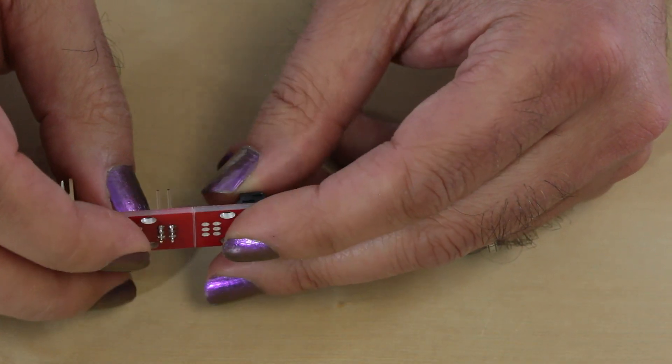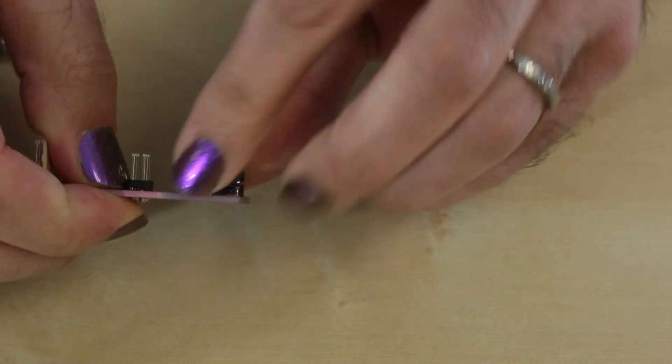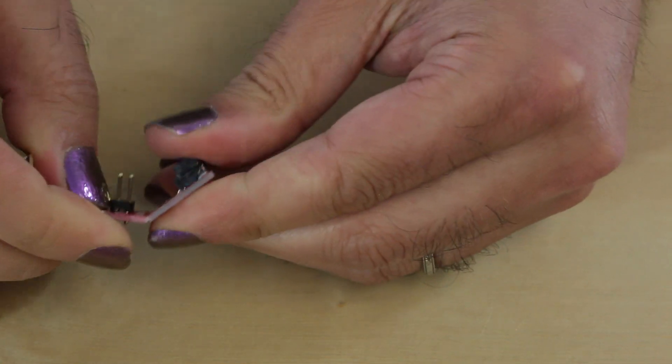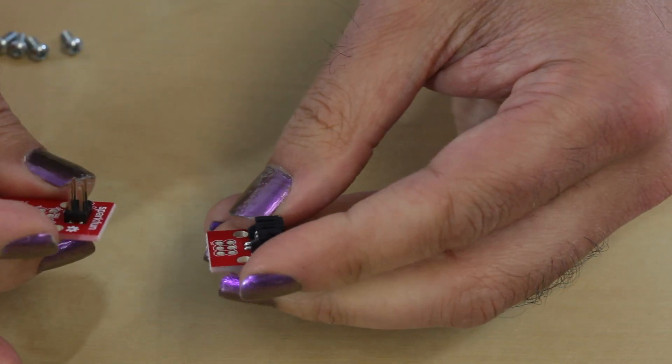We've reached the part where we break the board. You can see where it's scored here, a little snap, rock it a bit, and now we've got two pieces.